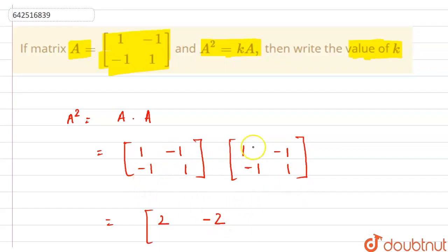Similarly, this will be minus 1 times 1 plus minus 1 times 1. So this will be minus 2. And this will be minus 1 times minus 1 plus 1 times 1, so this will be 2.